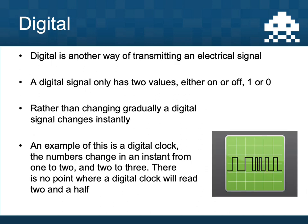A digital signal is another way of transmitting data but it's very different. A digital signal can only be on or off — a one or a zero. Rather than gradually changing, a digital signal snaps between one and zero. There's no in between; the signal is either fully on or fully off. There is no 0.6 or 0.3 — the signal is one or zero but nothing else.